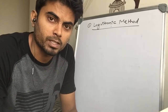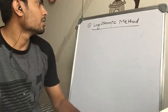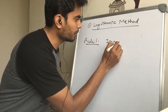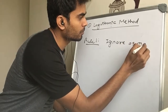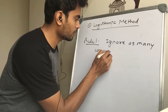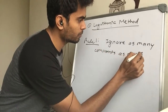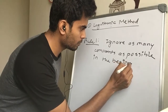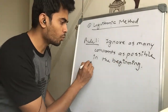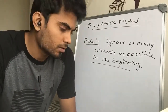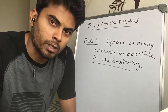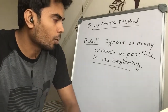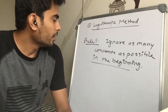The first rule is: ignore as many constants as possible, but that is to be done in the beginning. So once you apply the logarithm on your function, you cannot ignore any other constant variable — any other constant. You need to ignore all the constants in the beginning only.